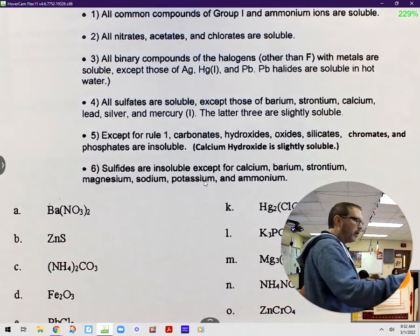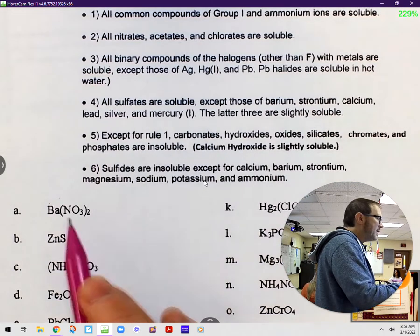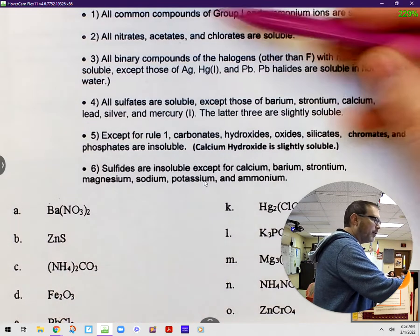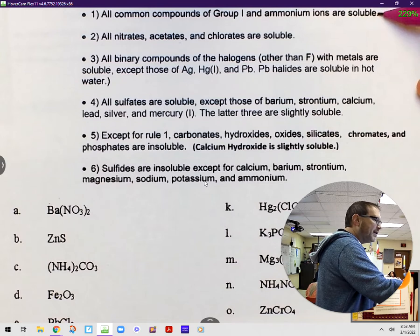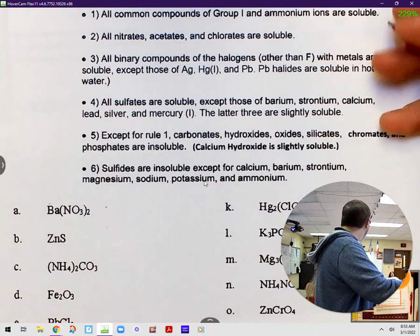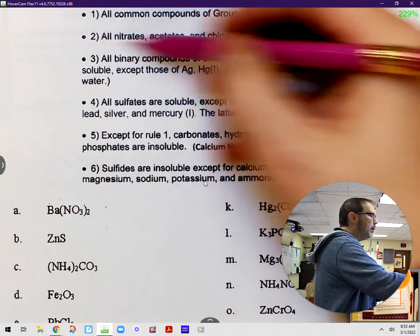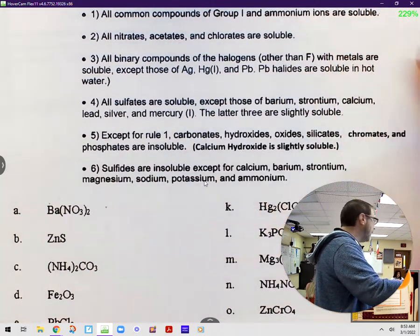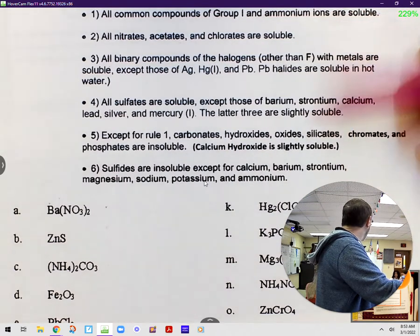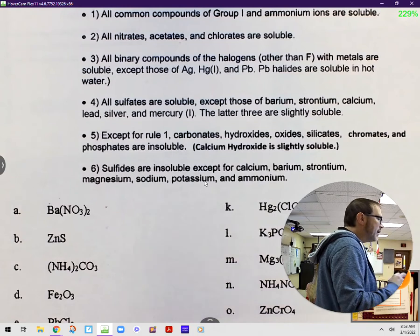The way that these rules work, if you take a look with me, what we're going to do is given, say, example A here. What we're going to do is we're going to look at each of these rules, starting with rule number one. If rule number one tells us whether this is soluble or insoluble, then we stop with rule number one. If rule number one has nothing to do with this substance, then we go on to rule number two. If rule number two tells us about it, we stop right there. If not, we move on to rule number three, etc. It's important that you follow these in order to help you predict whether something will or will not dissolve in water.